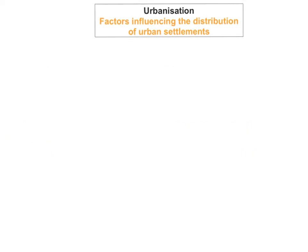Some factors have a big influence on the distribution of urban settlements and why people actually locate where they actually do locate. So the first factor that plays a big part is historical.